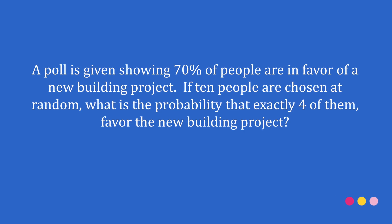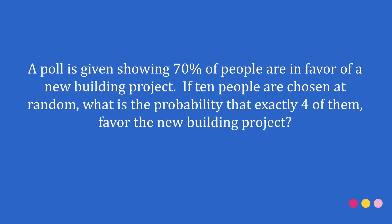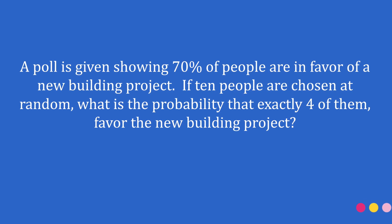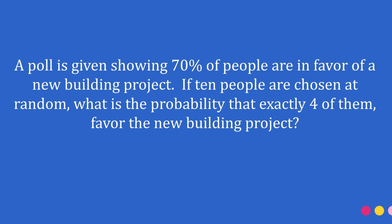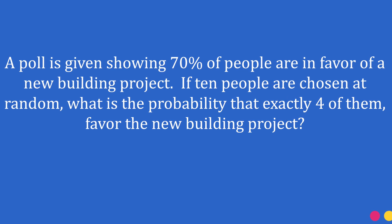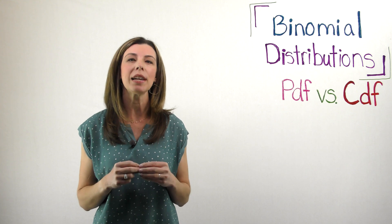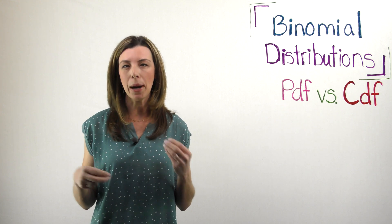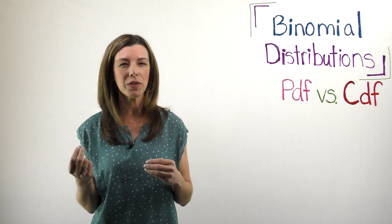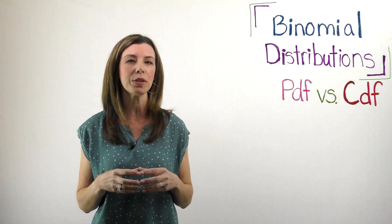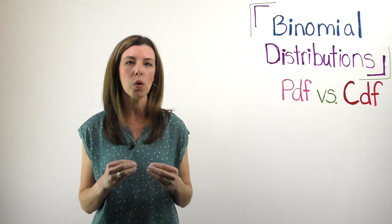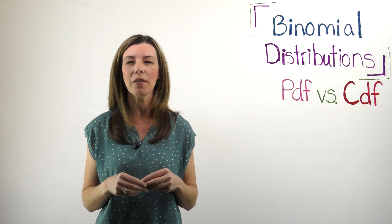A poll is given showing 70% of people are in favor of a new building project. If 10 people are chosen at random, what is the probability that exactly 4 of them favor the new building project? We've got a probability — we know that some people are in favor of this new project, but we want to know what's the probability that if we were to grab 10 people, exactly 4 would be in favor of that.